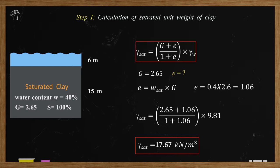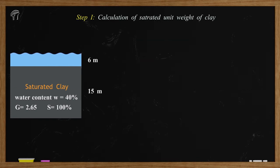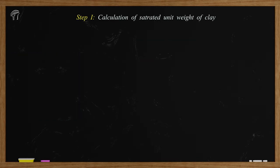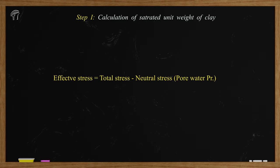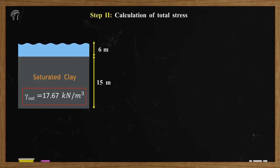Now we are ready to proceed to calculate effective stress. Just remember, effective stress is given by total stress minus neutral stress, which is also called pore water pressure. We will have to calculate both total stress as well as neutral stress. Total stress at any section is the product of unit weight of the material and the height of that material, and it is denoted by the symbol sigma.